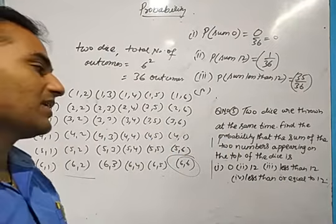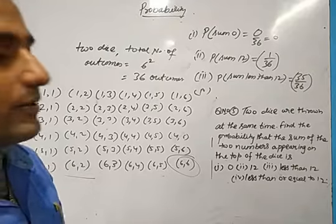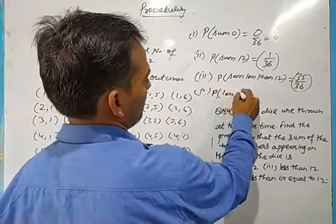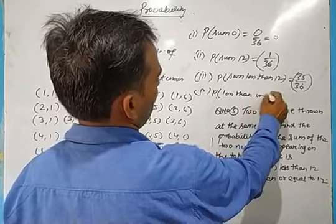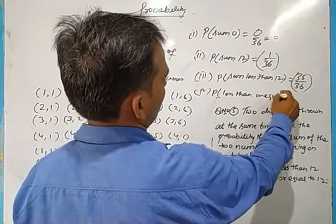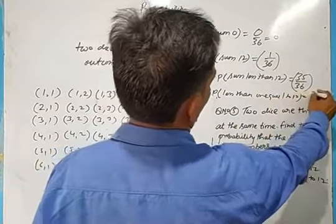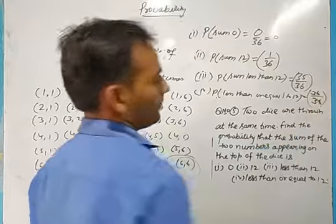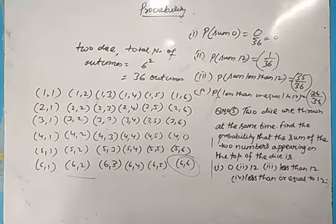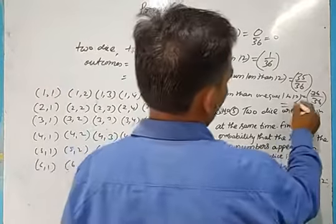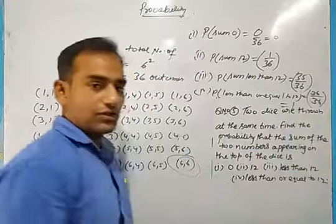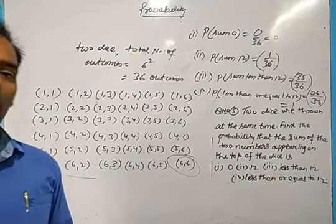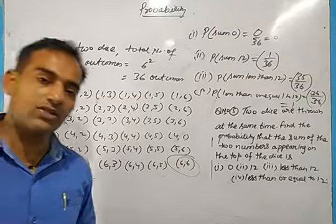For sum less than or equal to 12, all 36 outcomes qualify since the maximum possible sum is 12. So probability is 36 upon 36, which equals 1 — meaning 100% chance. These were some basic questions on probability. Some more questions will be done afterwards. Thank you so much, see you soon.